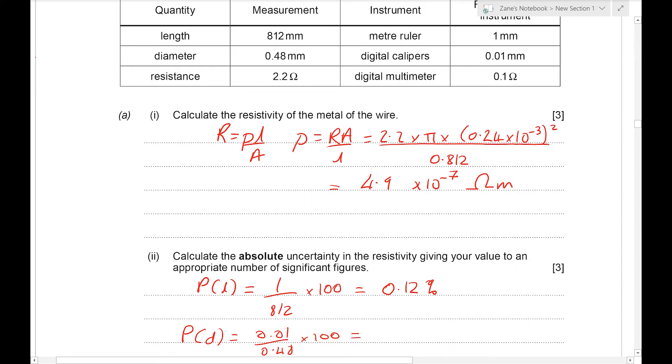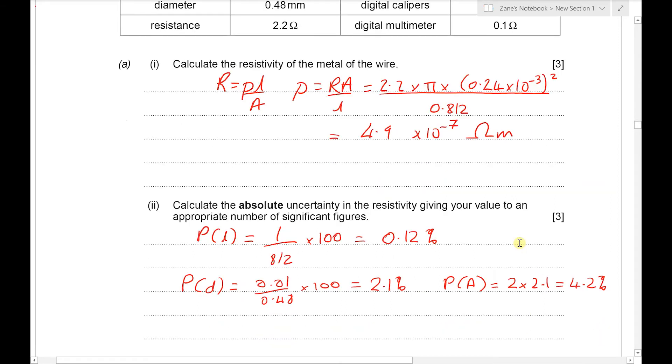And that will give us 2.1%. Now in the calculation of resistivity we don't actually use the diameter, we use the area. And the area was found by multiplying pi times half of the diameter squared. When we raise a quantity to a power the percentage uncertainty is multiplied by that power. So the percentage uncertainty in the cross-sectional area is going to be 2 times 2.1 or 4.2%.